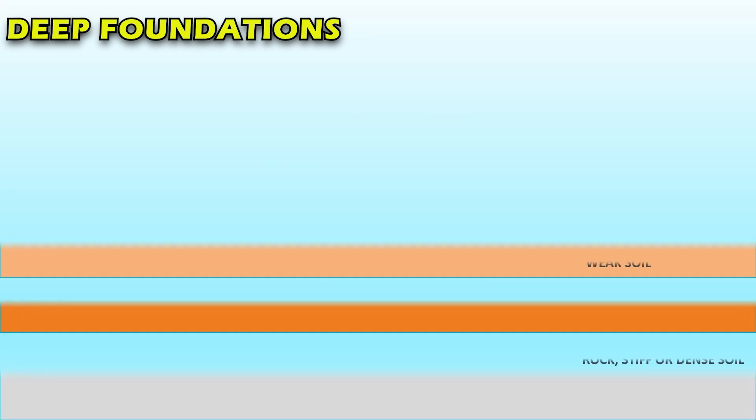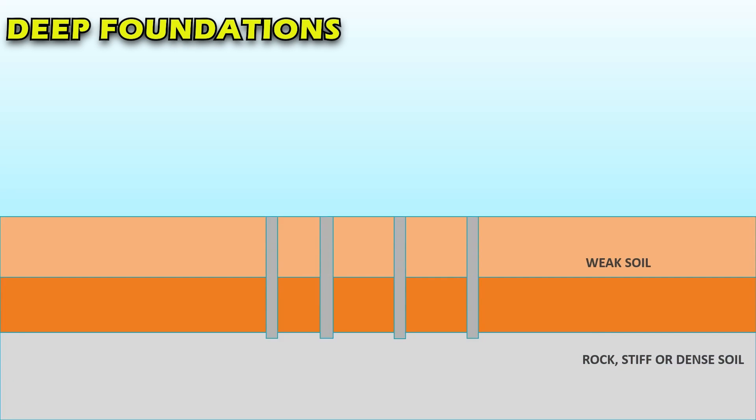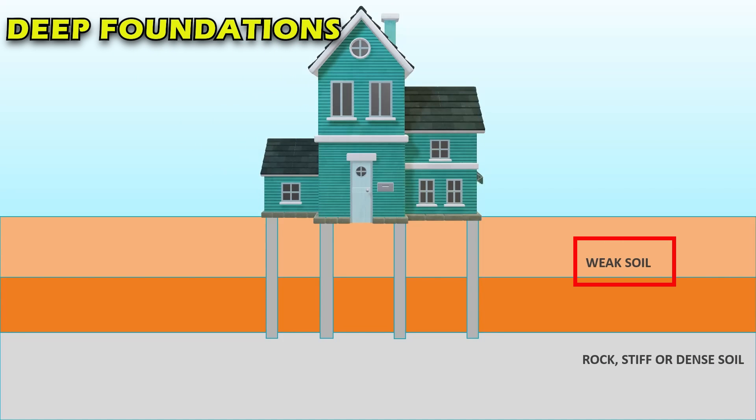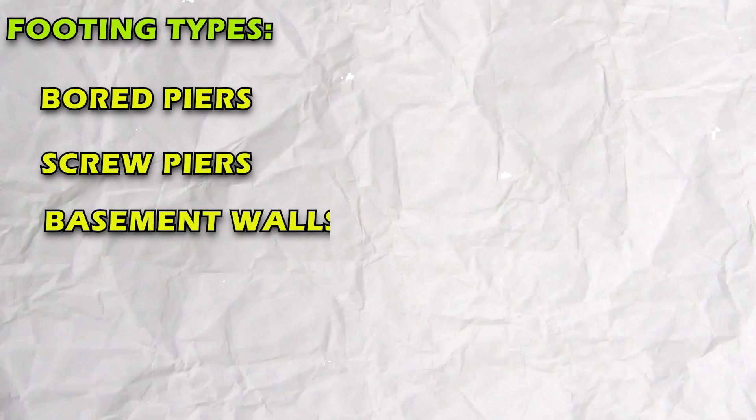On the other hand, deep foundations are used when the soil near the surface is not suitable for supporting the structure. Common types of deep foundations for houses include bored piers, screw piers, and basement walls. Let's have a quick look at each of these types of footings.